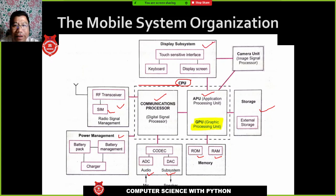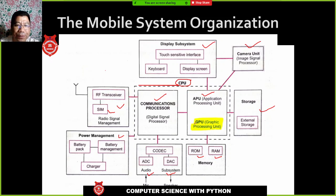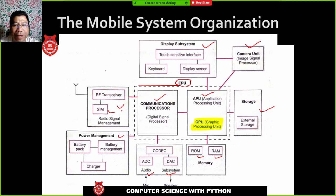We also have the display system, which may be a touch screen, and a camera unit that works closely with the APU — Application Processing Unit. This is the basic mobile system organization. It is similar to a computer: the display system and screen can be both input and output devices, and the CPU, RAM, ROM, battery, and camera all have computer equivalents.